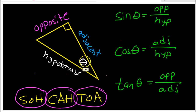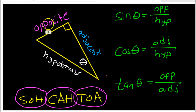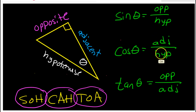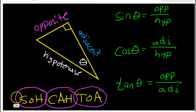Imagine that we choose this angle here, marked with a theta. The adjacent leg is the one right next to theta, and the opposite leg is the one across from theta. With that in mind, sine is opposite over hypotenuse, cosine is adjacent over hypotenuse, and tangent is opposite over adjacent.